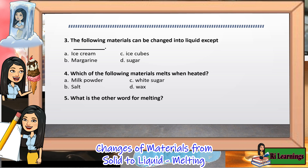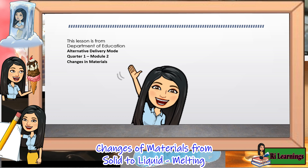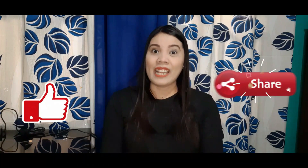Number 5: What is the other word for melting? A. Cooling. B. Changing. C. Heating. D. Liquefaction. And that's the end of our lesson for today. I hope that you've learned something from our topic. Remember, when there is a will to learn, you will acquire knowledge easier. Goodbye, stay tuned for other videos.